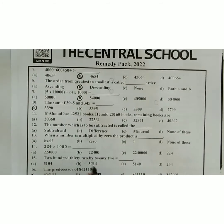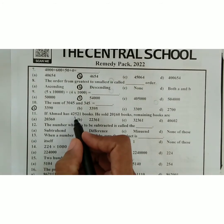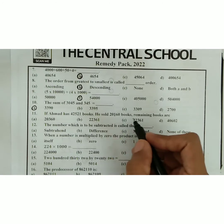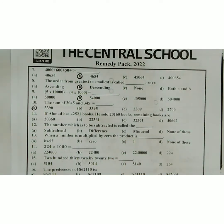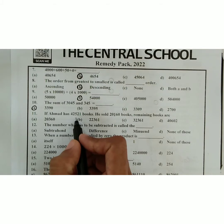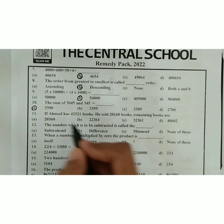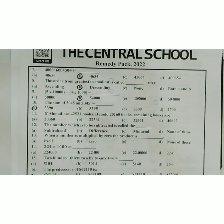Next, question eleven: Ahmad has forty-two thousand five hundred twenty-one books. He sold twenty thousand one hundred sixty books. How many books remain? Since Ahmad had these books and sold these books, we need to find the remaining books by subtracting the two values. Move to the board.